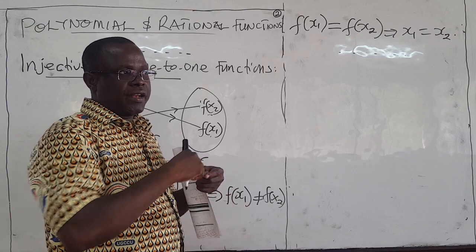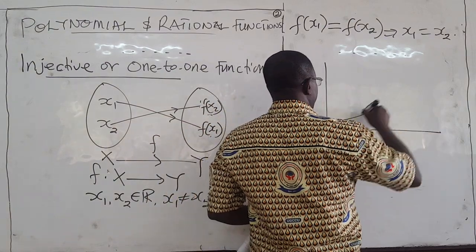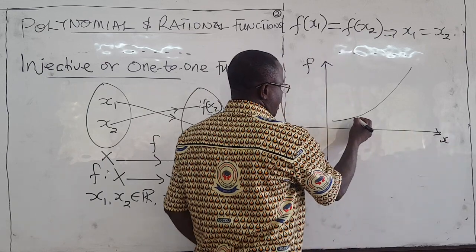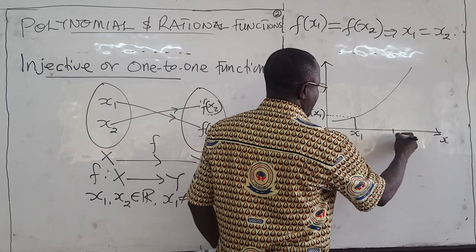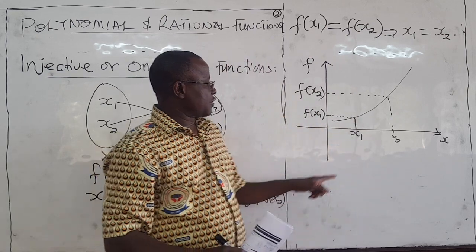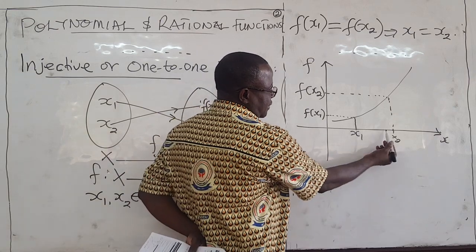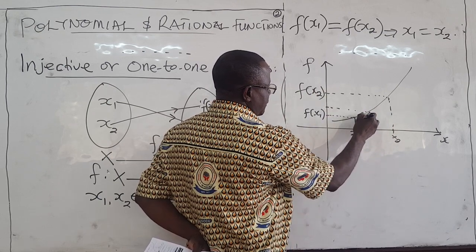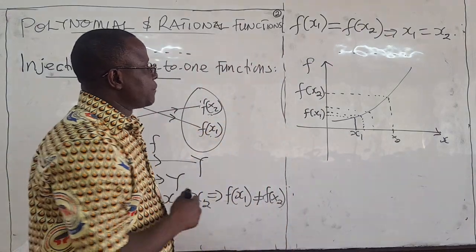Graphically, one-to-one functions are functions that are either increasing or decreasing. For example, suppose this function is increasing — whether a straight line or curve. Given X1, the value of the function is f(X1), and for X2 it is f(X2). As long as these two elements are not the same, their function values should be different. If X2 moves closer to X1, then f(X2) moves closer to f(X1). If X2 becomes X1, then f(X2) must equal f(X1).